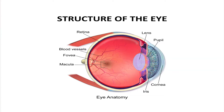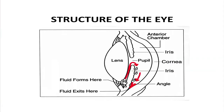For example, when we enter a dark room, the iris dilates the pupil so that more light can enter the eye. And when we step out from a dark room into bright sunlight, the iris constricts the pupil to reduce the amount of light entering the eye.